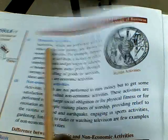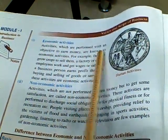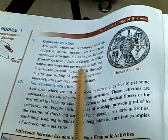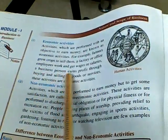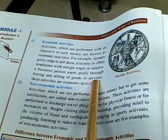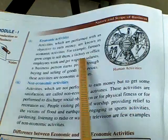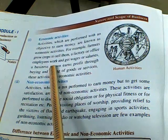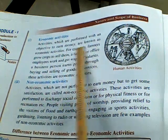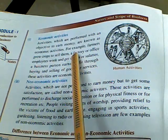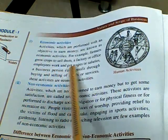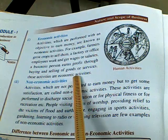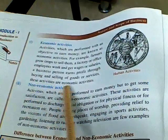Economic activities are activities which are performed with an objective to earn money. For example, farmers grow crops to sell them; factory or office employees work and get wages or salaries; a business person earns profit through buying and selling of goods and services. These are economic activities. Farmers grow crops and sell them to earn money; in factories and offices, people work and get their salaries. A business person gets into business and earns profits by selling goods and services.